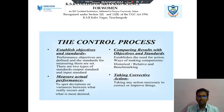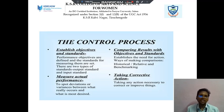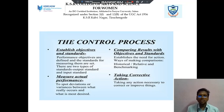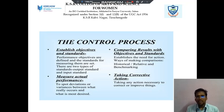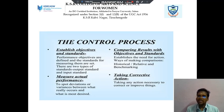Next we discuss the Control Process. There are four points. The first is Established Objectives and Standards — the performance objectives are defined and the standards for measuring them are set. There are two types of standards: Output Standard and Input Standard. Next, we measure actual performance to spot deviations or variance between what really occurs and what is desired. Then, comparing results with objectives and standards, establishing the need for action through historical, relative, and benchmarking comparisons.